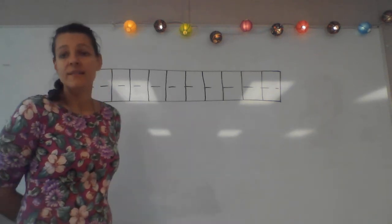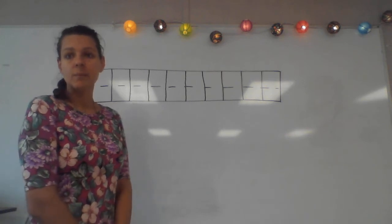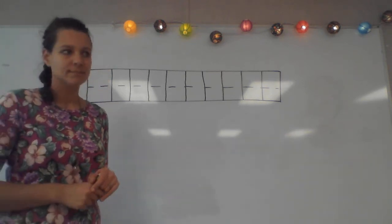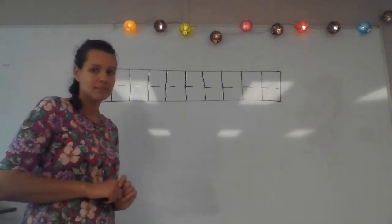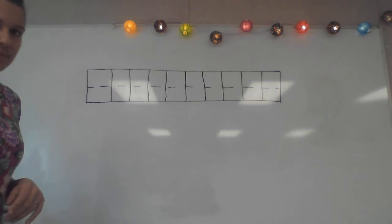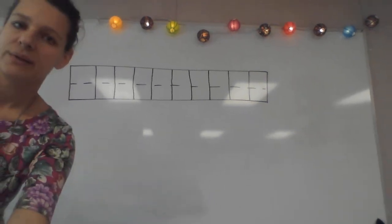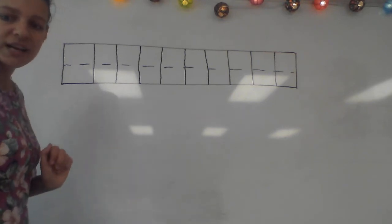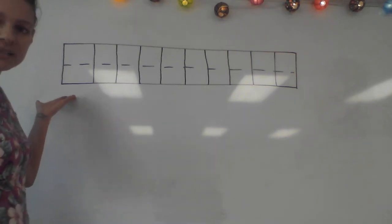And then in the last box, B. Again, B. All right, class, now it's your turn to tell me what to write. I'll write it and you can check your work. So what goes in the first box?